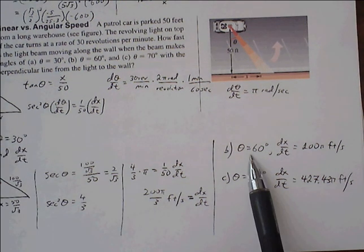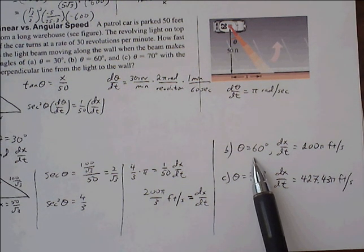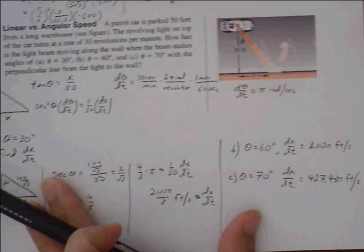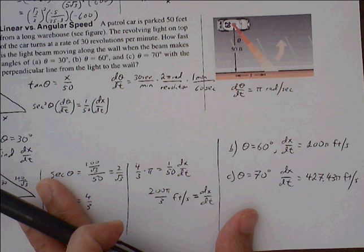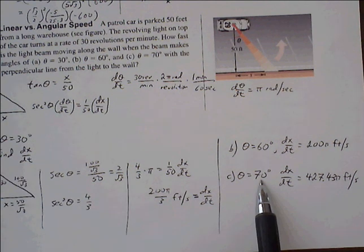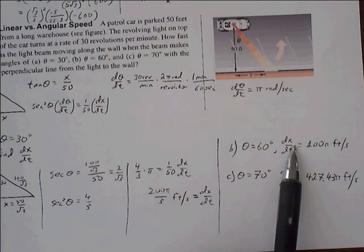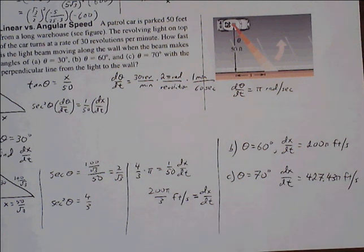And then for part b, we go through the same process. When theta is 60, we make the adjustment with secant theta. And when theta is 70, we also make the adjustment, but we use the same equation. For b, we get 200π feet per second. And for c, we get 427.43 feet per second.